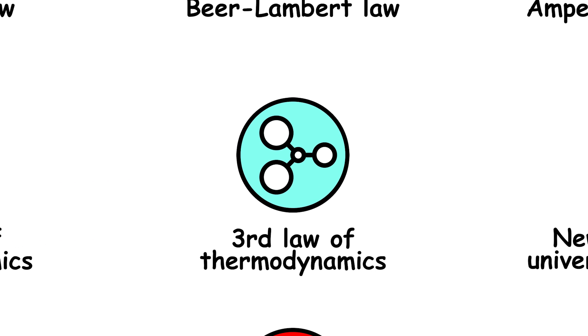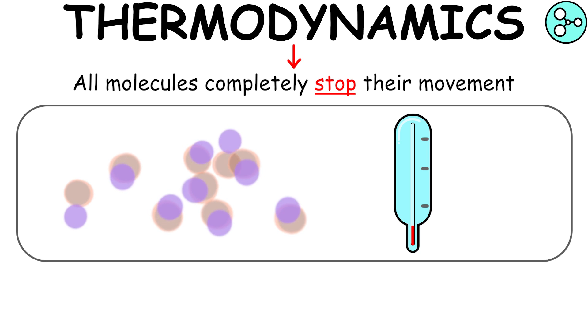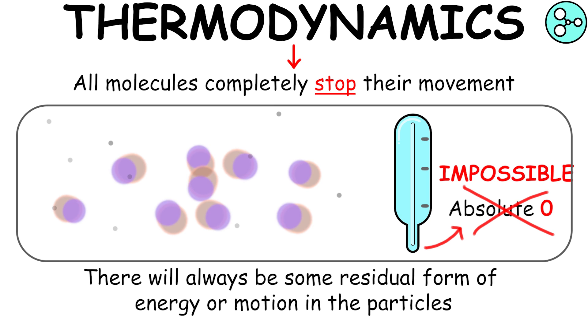Third Law of Thermodynamics states that all molecules completely stop their movement when a system reaches the temperature of absolute zero. But this would be impossible because there will always be some residual form of energy or motion in the particles, even if they are extremely small.